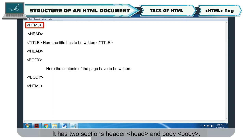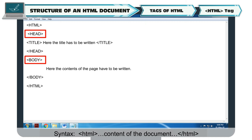HTML Tag: It informs the web browser that the page is formatted in HTML. It has two sections: header and body. Its syntax is: &lt;HTML&gt; content of the document &lt;/HTML&gt;.